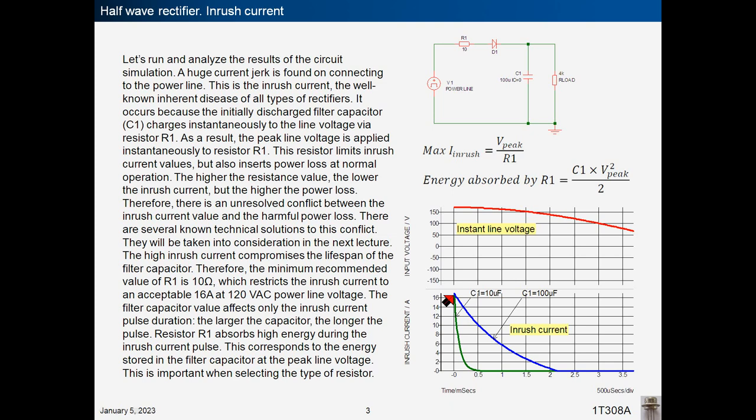The filter capacitor value affects only the inrush current pulse duration — the larger the capacitor, the longer the pulse. At 10 microfarad the pulse is short; at 100 microfarad it is much longer. The resistor R1 absorbs high energy during the inrush current pulse, corresponding to the energy stored in the filter capacitor at the peak line voltage, as shown in this equation. This is important when selecting the type of resistor.